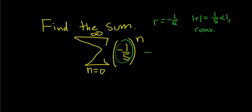To find the sum, you can take a really easy shortcut. Here's how you do it. You take this number here and put it wherever you have an n, and that goes up top. So it'd be (-1/5)^0.